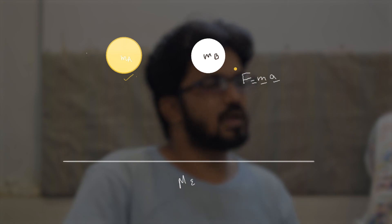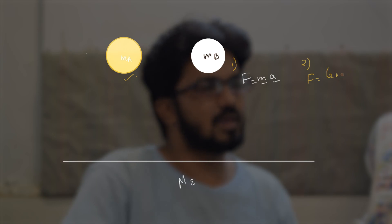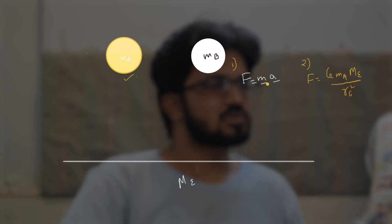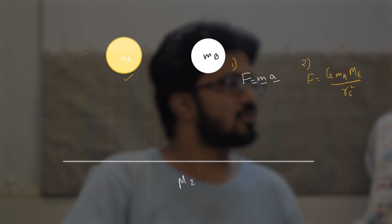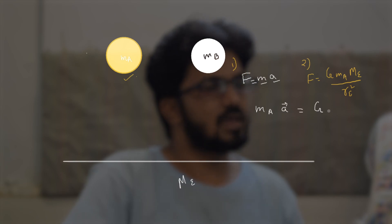By Newton's first law, we know that F = ma, and by the law of gravitation, we know that F = G × M_E × m divided by r squared, where G is the gravitational constant, M_E is the mass of the Earth, m is the mass of the object, and r is the radius of the Earth. We equate these: m × a = G × M_E × m divided by r squared.